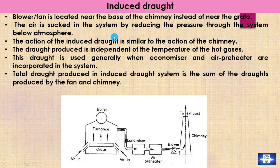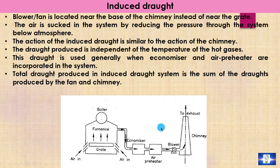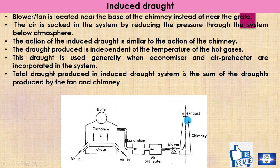In the induced draft system, the fan or blower is installed very near to the chimney. This fan sucks the flue gases in the boiler system, so the pressure in the boiler system is less than the atmospheric pressure. The draft produced by the induced draft system is the sum of the draft produced by the fan and the draft produced by the chimney.